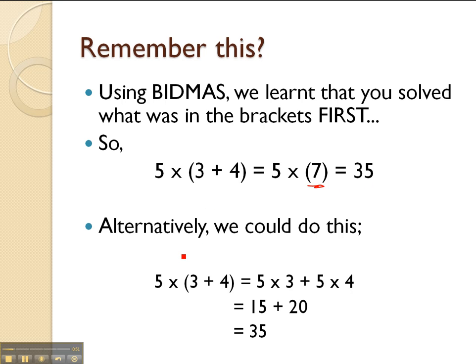But alternatively we could do this: 5 times in brackets 3 plus 4, we could say what's 5 times 3, and then what's 5 times 4. So here we have 5 times 3 plus 5 times 4. 5 times 3 is equal to 15 and 5 times 4 is equal to 20, so 15 plus 20 equals 35. Now in both cases we get the same answer.